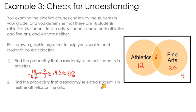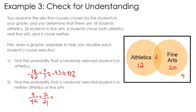Find the probability that a randomly selected student is in neither athletics nor fine arts. There are 4 students who chose neither, out of 42 total possible outcomes. That gives 4 over 42, which simplifies to 2 over 21 — or about 9.5%. That's the basic idea of probability: number of successes out of total outcomes.